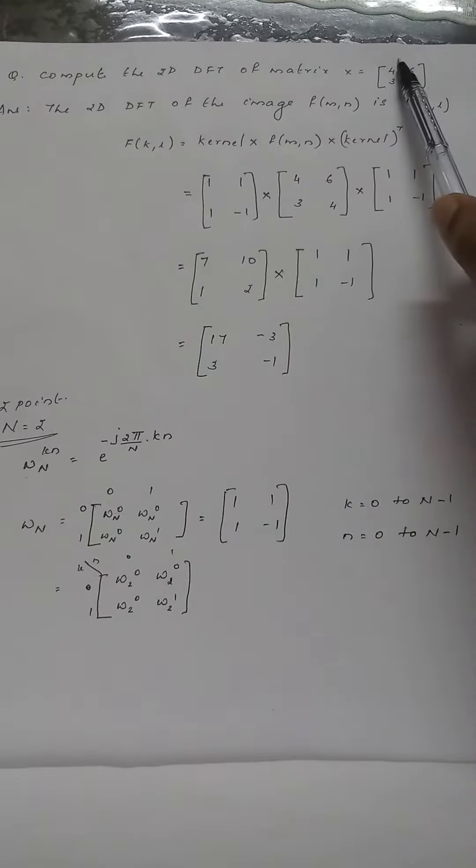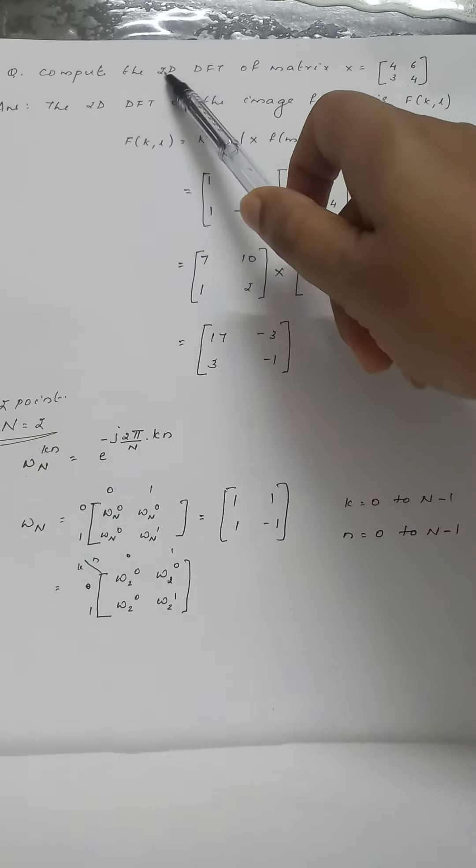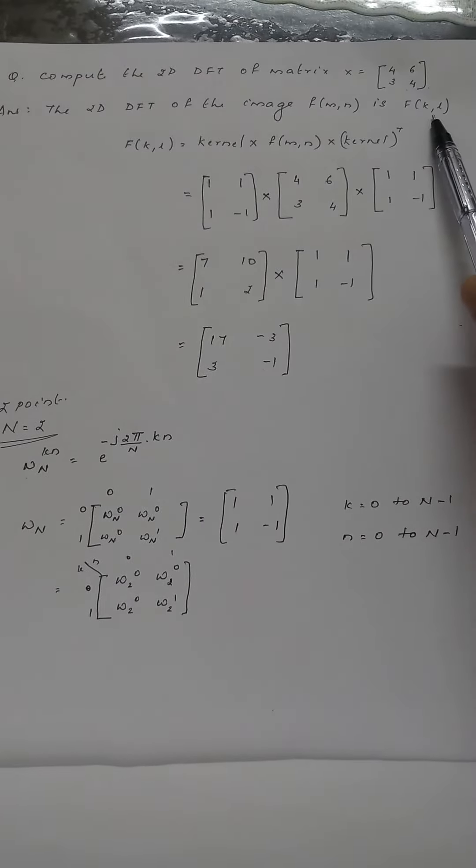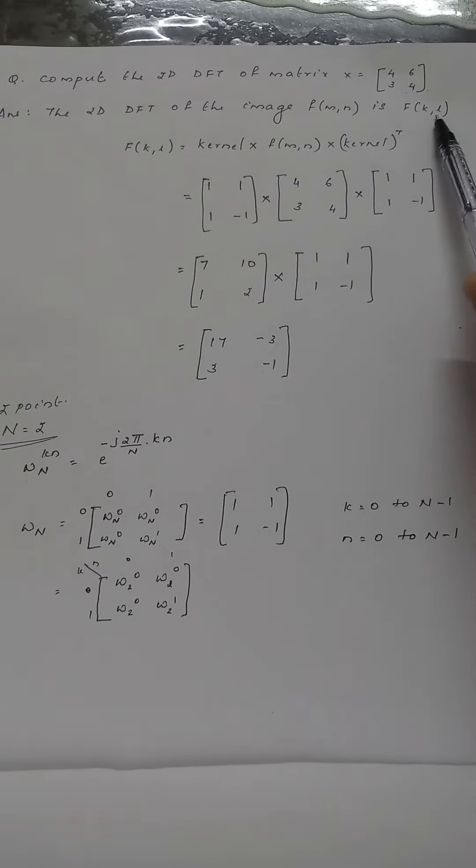Since this is two-dimensional, 2D means two dimensions. The 2D DFT of an image f(m,n) is represented by F(k,l).